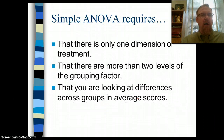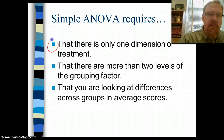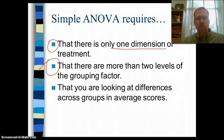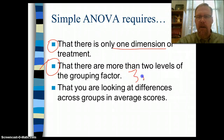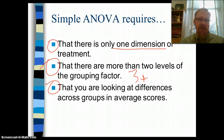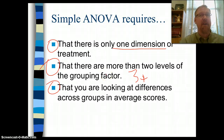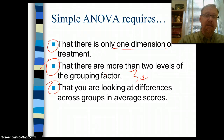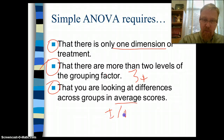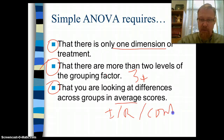Simple ANOVA has some requirements. One: there is only one dimension or treatment — one grouping dimension. Two: there are more than two levels, or units, of the grouping factor — three or more. Three: you are looking at differences across the groups in average scores, meaning differences in the dependent variable. We can think of the grouping factor as the independent variable, and the average within each group as the dependent variable, which will be an interval or ratio variable on a continuous measurement scale.